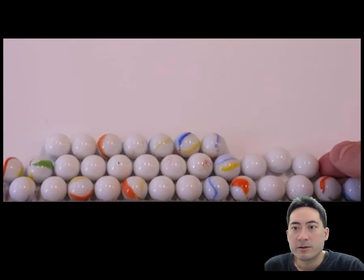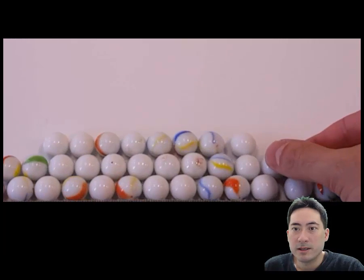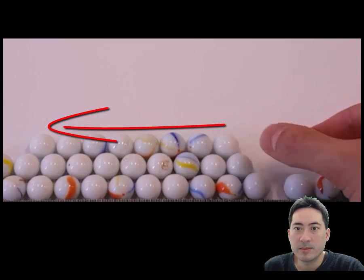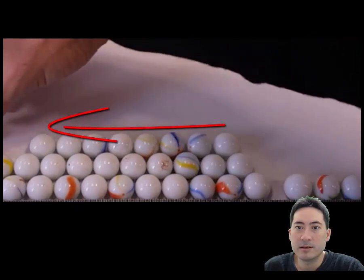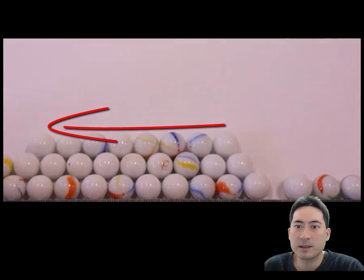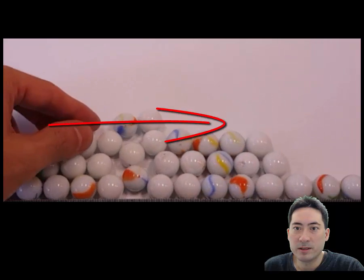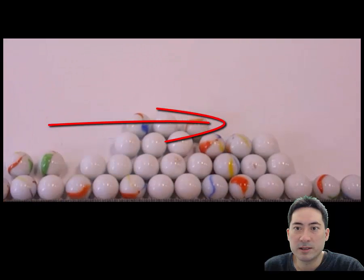Now for the properties of metals — you can see here that if you push them, they can slide past each other, so they're malleable and ductile, because they're free to move within a sea of delocalized electrons.